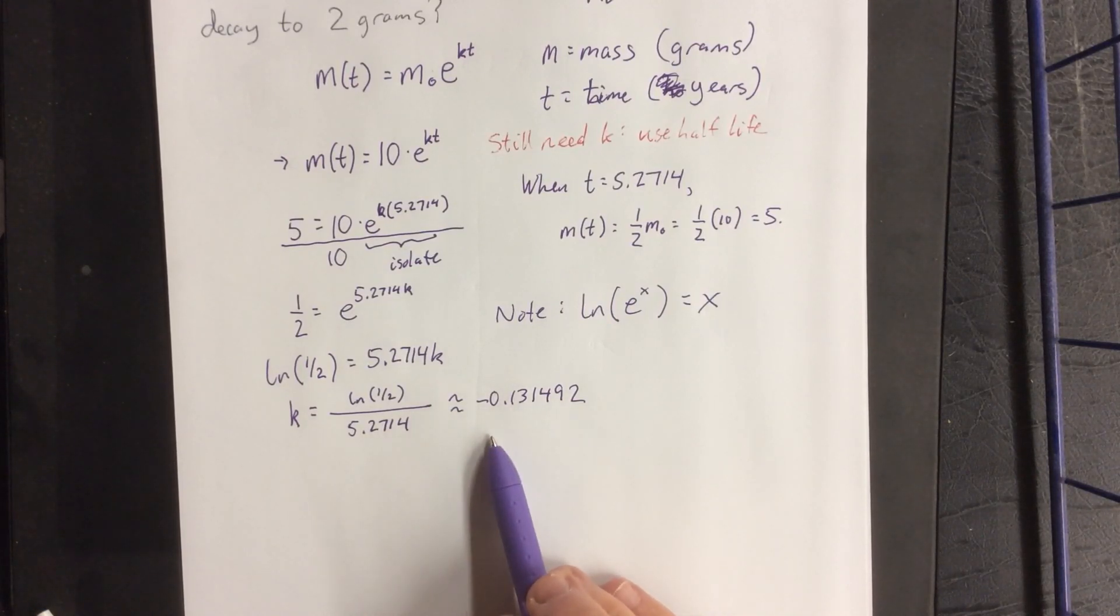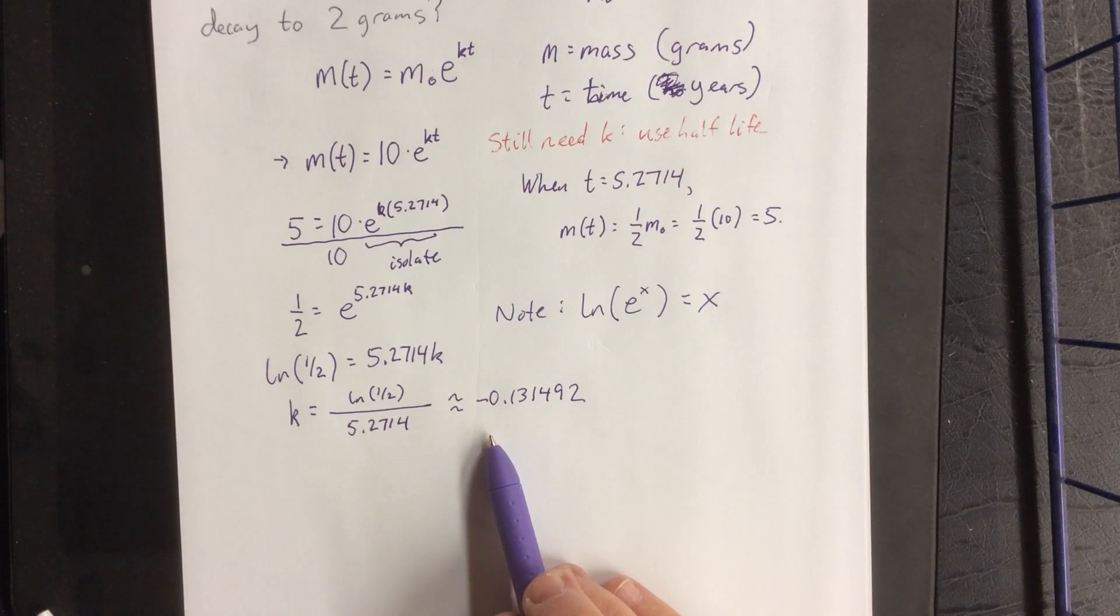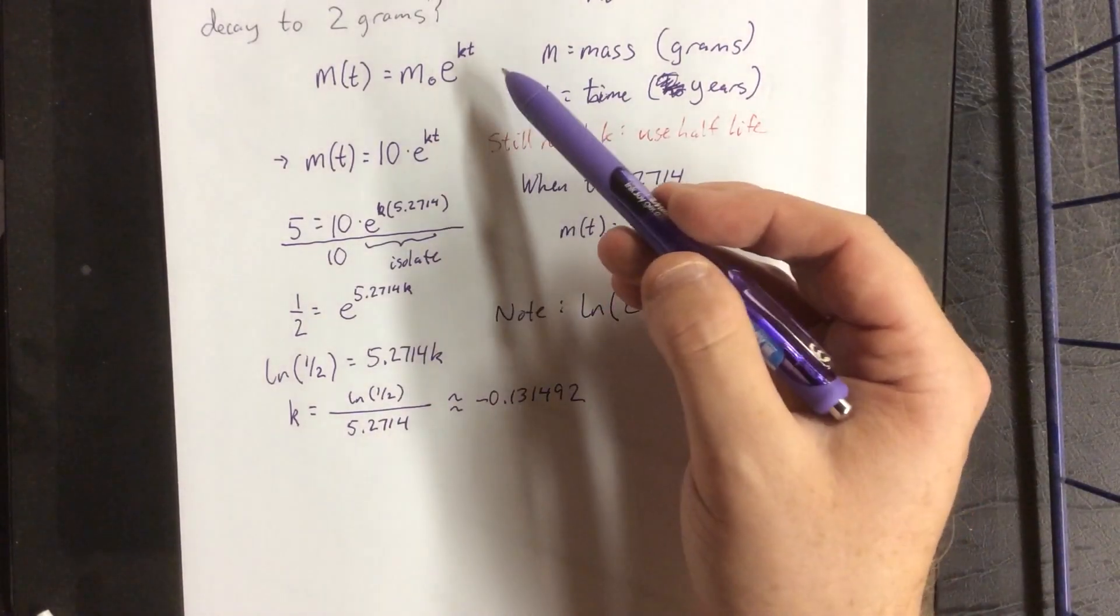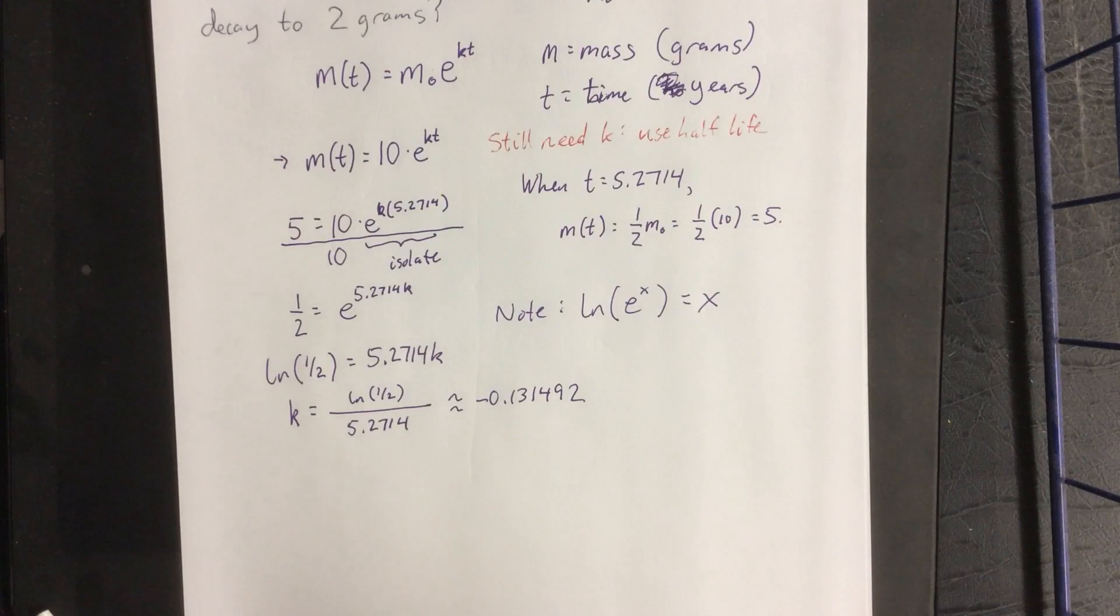So rounding to six decimal places on this, it'll be about negative 0.131492. The fact that we got a negative number here was expected. It's expected due to the fact that this is a decay model, and in a decay model your k value is negative.